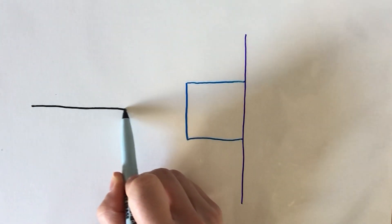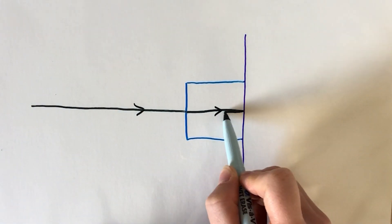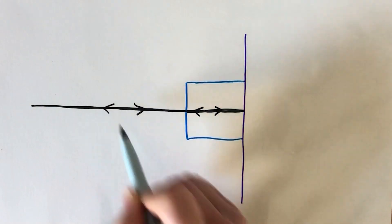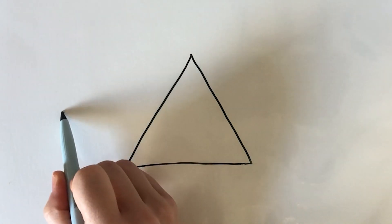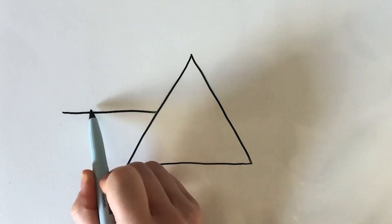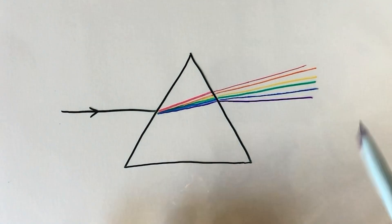When light hits a transparent object, most of it goes through the object and reflects off the other side. But if the light hits it at an angle, something very different happens — it refracts, or bends.